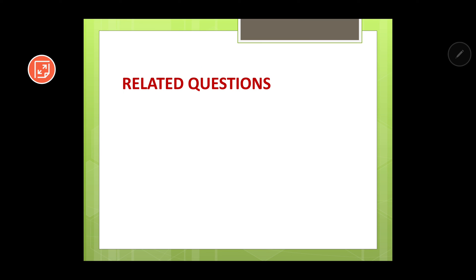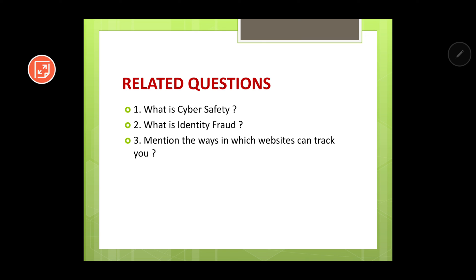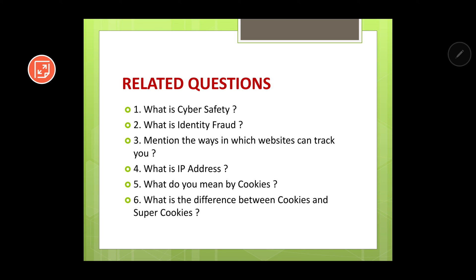These are the various ways in which websites can track us. Whenever you visit websites, various information goes to that particular website. In the next session we'll learn how to protect ourselves so that websites do not get our information completely. Based on today's session, here are some questions to attempt: What is cyber safety? What is identity fraud? Mention the ways in which websites can track you. What is an IP address? What do you mean by cookies? What is the difference between cookies and super cookies?